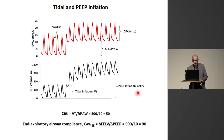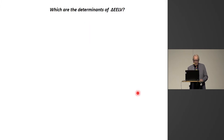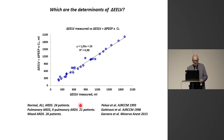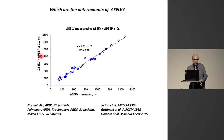So what is this compliance — the end-expiratory airway compliance? What are its determinants? We looked into a previous paper that had all the data necessary to calculate. On the x-axis is the delta EELV measured, and on the y-axis is the volume calculated as delta PEEP times the lung compliance.